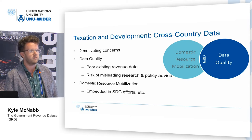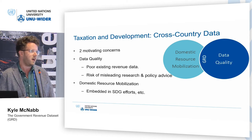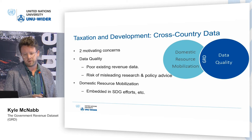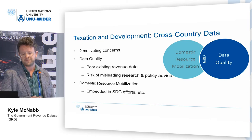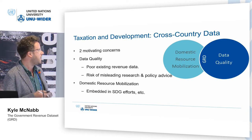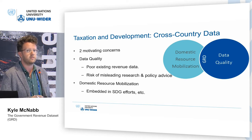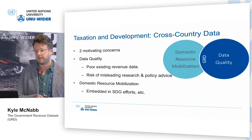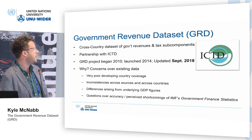The implication for researchers was that you might have a lot of different papers using different datasets from different sources, and it's hard to know which one to believe. A lot of research would come out of, for example, the IMF's Fiscal Affairs Department, and they often used data that wasn't publicly available. That meant researchers had a hard time trying to replicate or interrogate those results. So the idea was to create an open dataset of government revenues with better developing country coverage, bringing together data from different sources in a comparable way. This speaks to broader discussions about domestic resource mobilization, which has come to the fore in recent years.